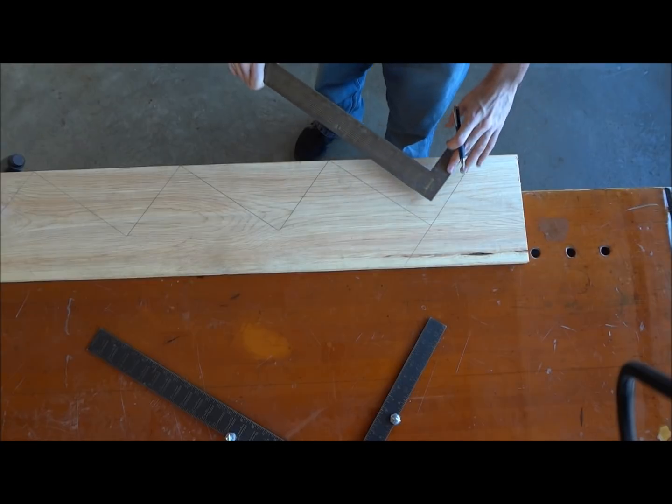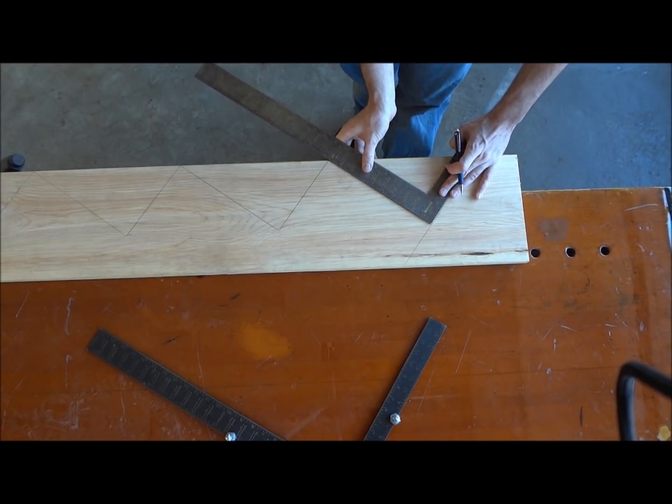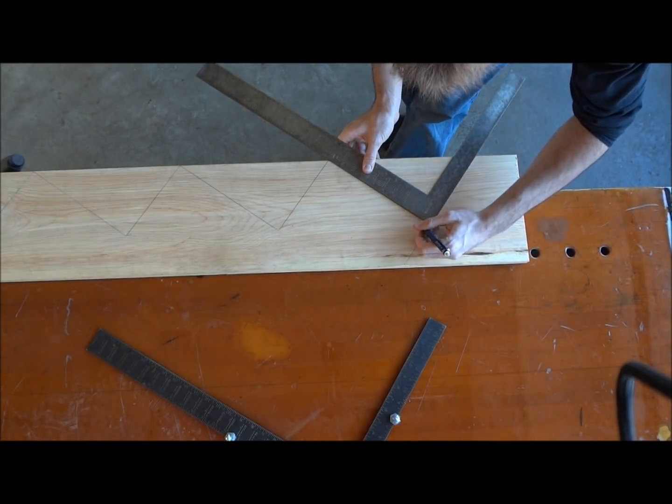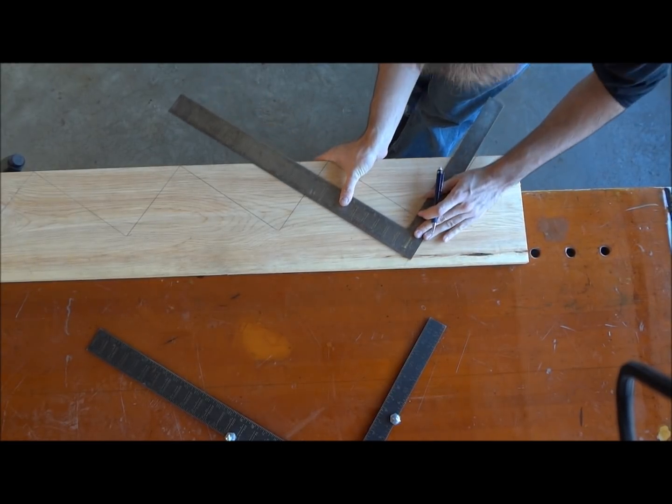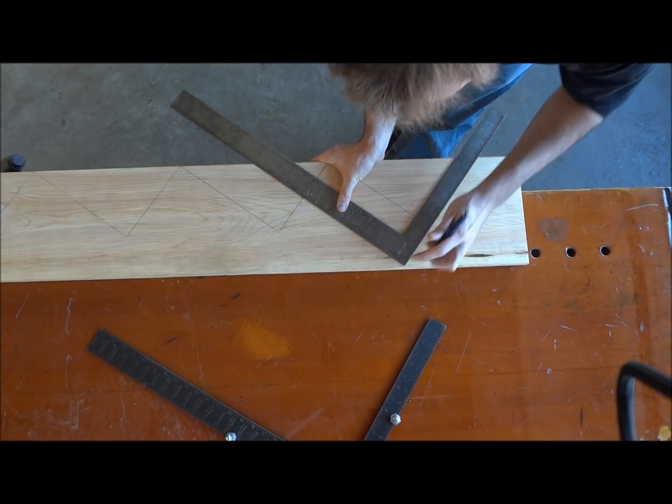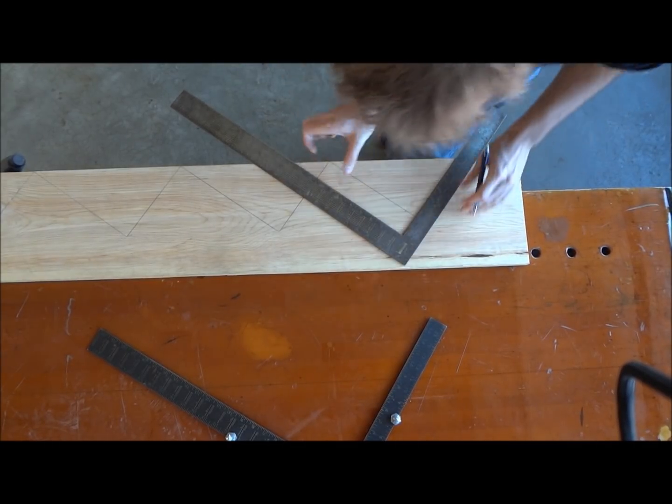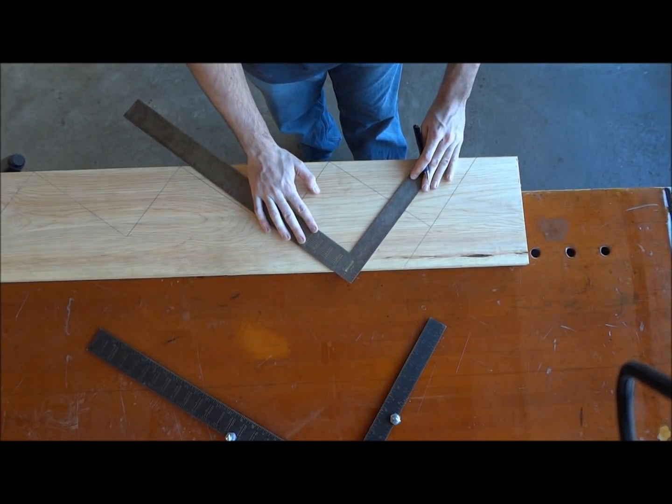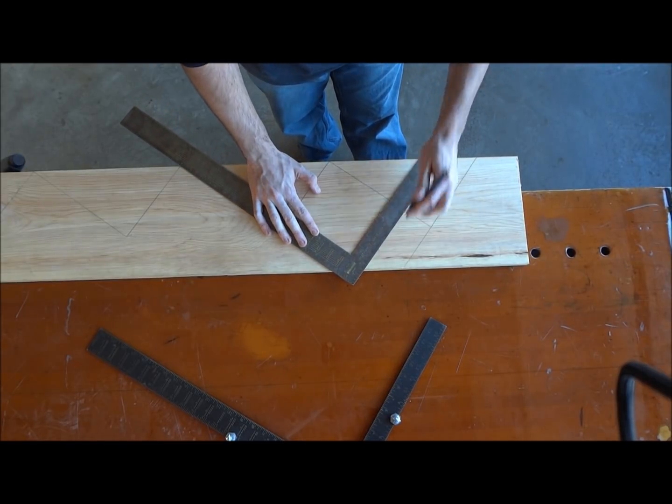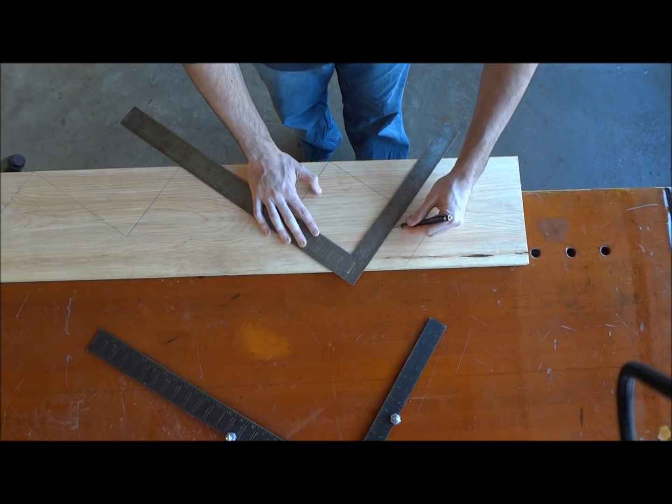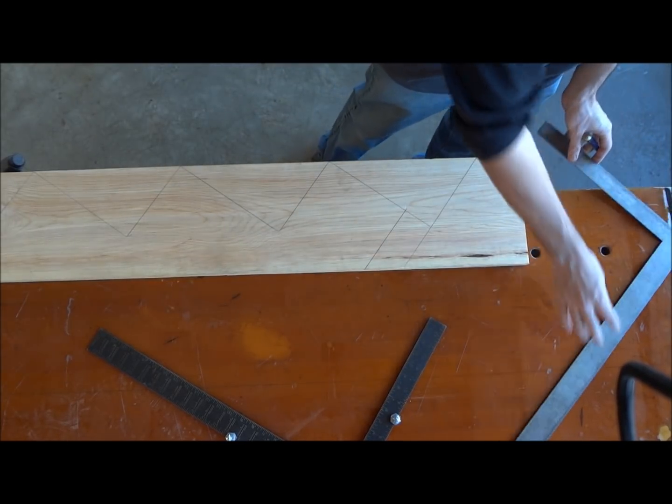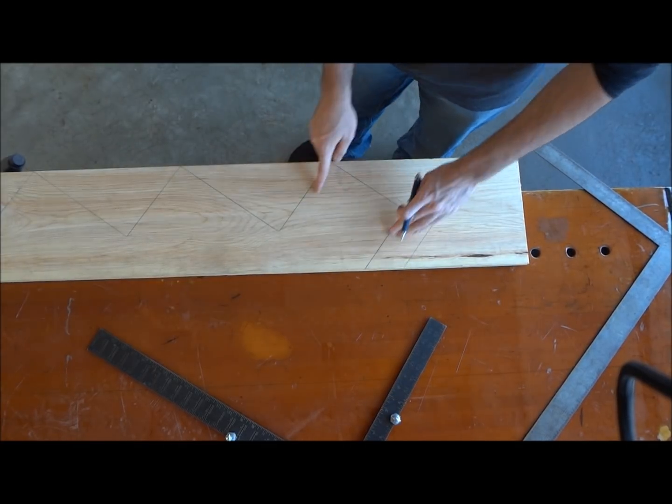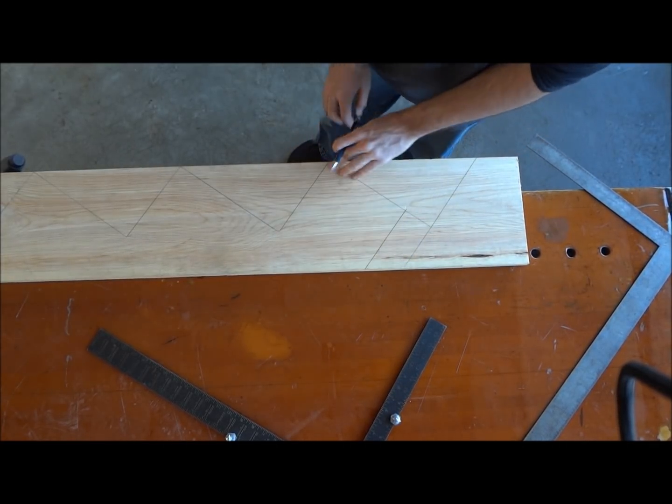So just like before, on the other side, line this up. Take both riser board and ledger board space out. Line that up. And there you go. This should be the top of our stair stringer.